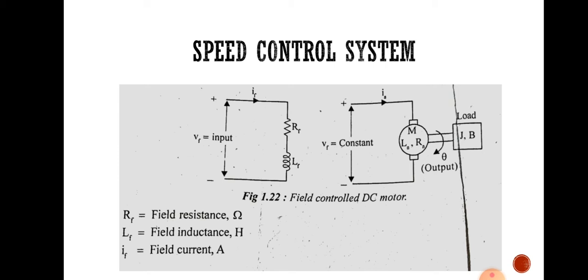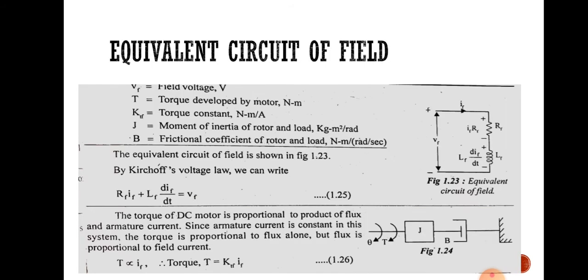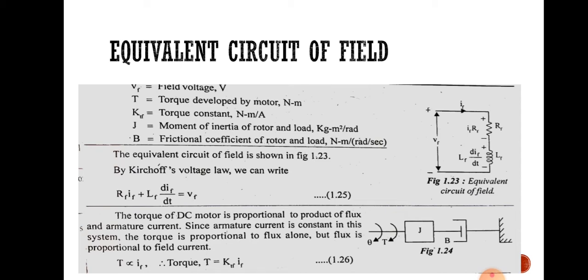The various quantities are: Rf — field resistance; Lf — field inductance; If — field current; Vf — field voltage; T — torque developed by the motor; KTF — torque constant; J — moment of inertia of rotor and load; B — frictional coefficient of rotor and load.